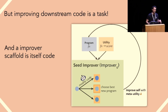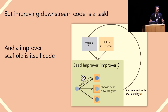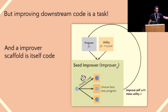What this means is: how do you define the utility for an improver? What you can actually do is define the utility of an improver according to how well it improves the utility of other downstream tasks. Given a seed improver, you can pass that improver to itself, ask it to improve programs on some collection of downstream tasks, and see which of the improved improvers helped.